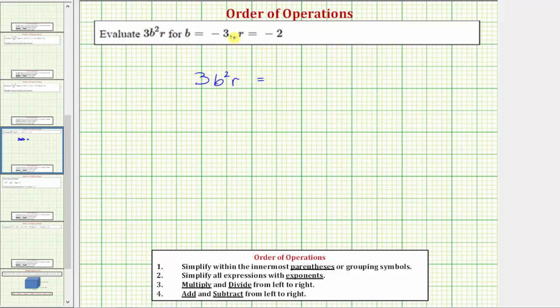And because b equals negative three, we'd have three times the square of negative three, and because r is equal to negative two, we'd have times negative two.